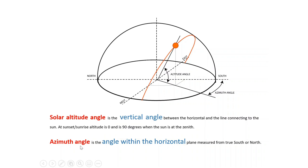Altitude angle is the vertical angle between the horizontal and the line connecting to the sun. When this is the horizontal, this is the line connecting to the sun. The angle between these two lines is the altitude angle. When the sun is at the rising position, altitude angle corresponds to 0 degree. And when the sun rises above our head, the angle changes to 90 degree.